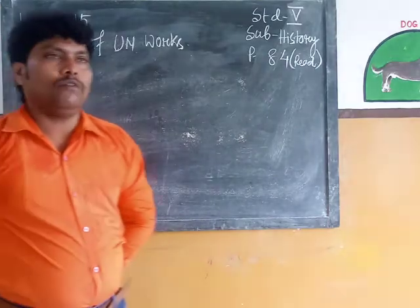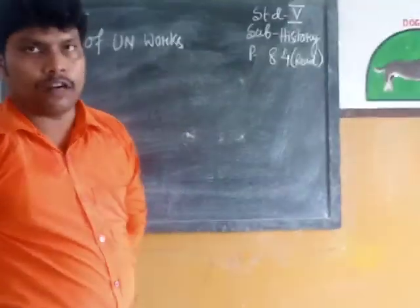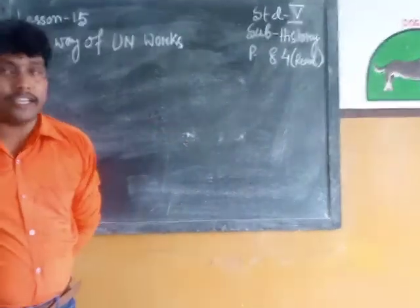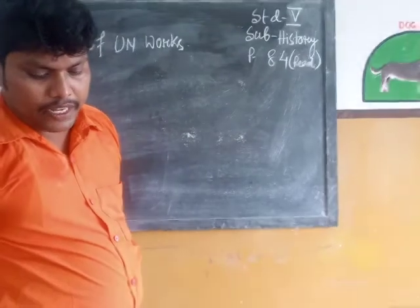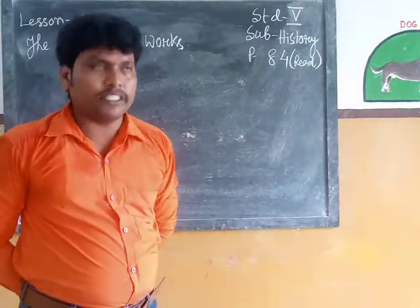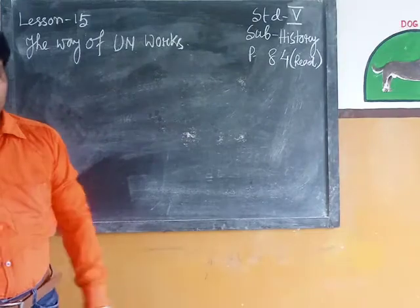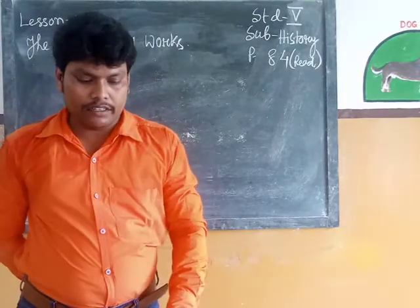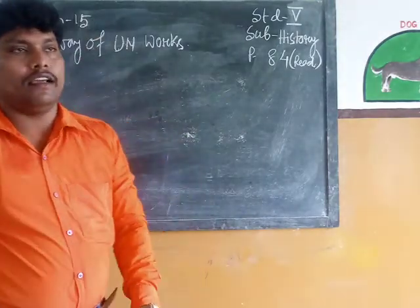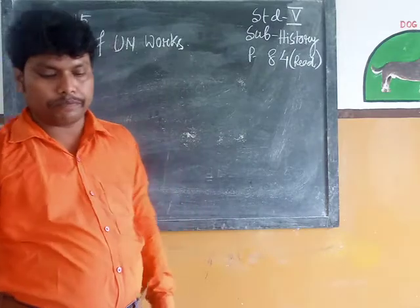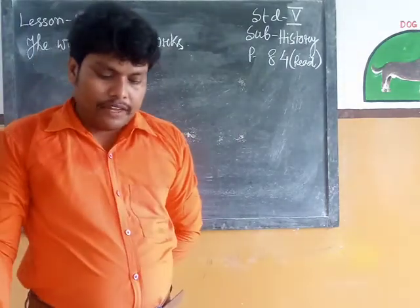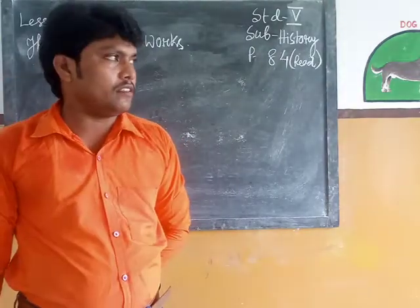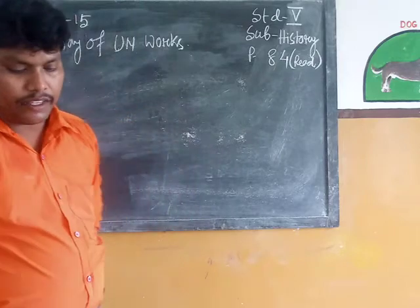They are working against world war — that means they are trying to make the world peaceful. Amongst these six main organs, today we will discuss only three: the General Assembly, the Security Council, and the Secretariat.